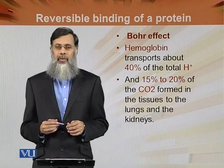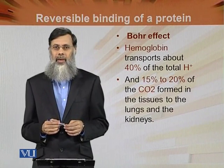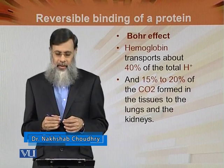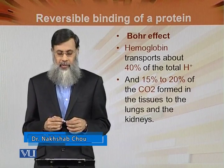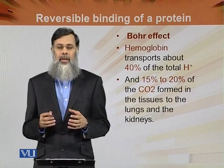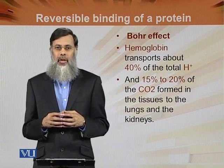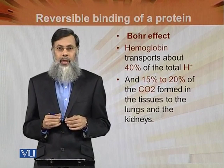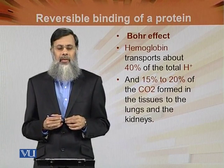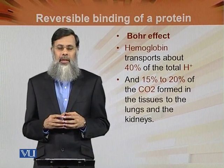We have already discussed in brief the Bohr effect, but in this module we will discuss in detail what the Bohr effect is. Hemoglobin transports about 40% of the total hydrogen ions produced in the human body through metabolism. Additionally, 15 to 20% of the carbon dioxide formed in the tissues is also transported to the lungs and kidneys through hemoglobin.